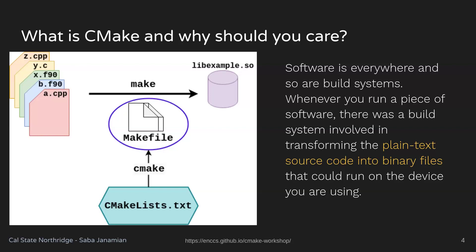You've done similar activities in the last couple of labs — I was asking you to compile files into object files and then link them at the end. For three files, you had to run three or four commands to compile, plus one last command to link them together into an executable. Now imagine if you have a thousand of those. How can you manage that? You could write all your compiler commands by hand and run them one at a time, but that would be problematic.